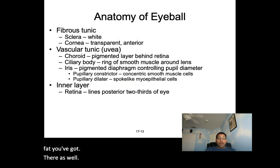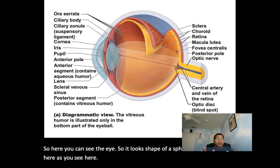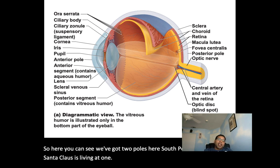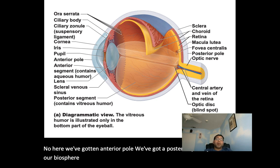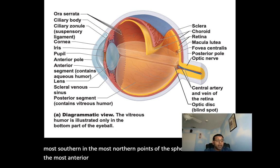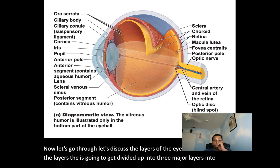The eye has an anterior pole and a posterior pole, just like a biosphere has a south and north pole — the most anterior and most posterior points. The eye is divided into three major layers. The first layer is the fibrous layer, which is the outermost layer.